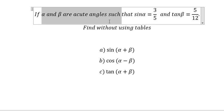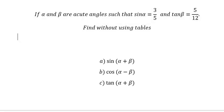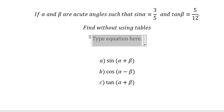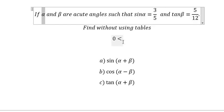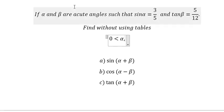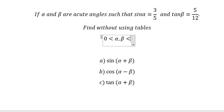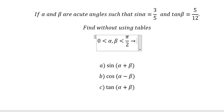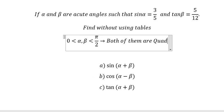The first thing: alpha and beta are acute angles. So we know that acute angles means alpha and beta should belong from 0 to pi over 2, which means both of them are in quadrant number 1.